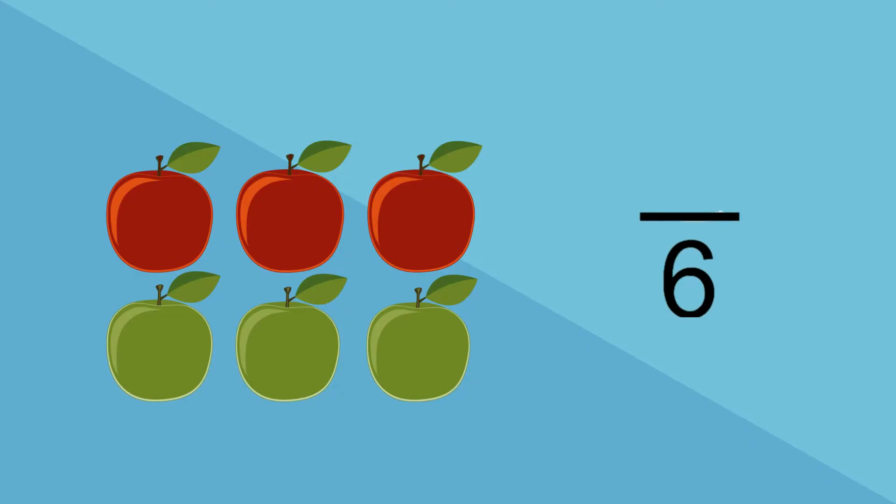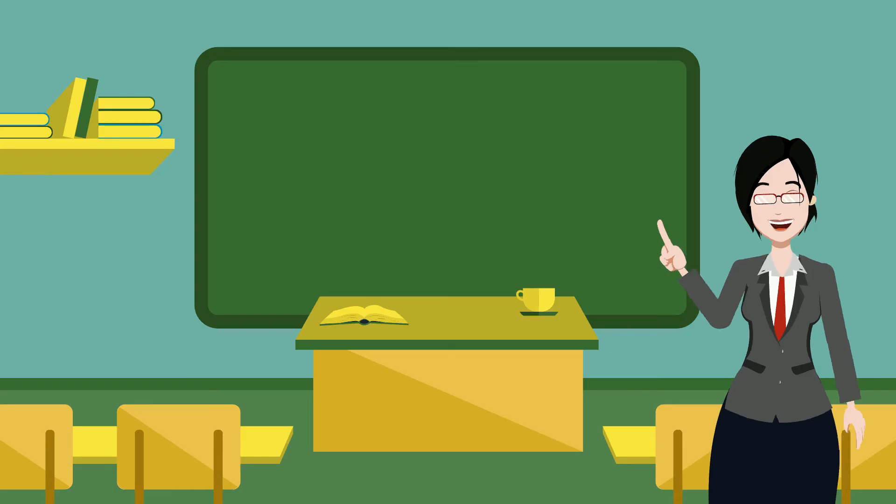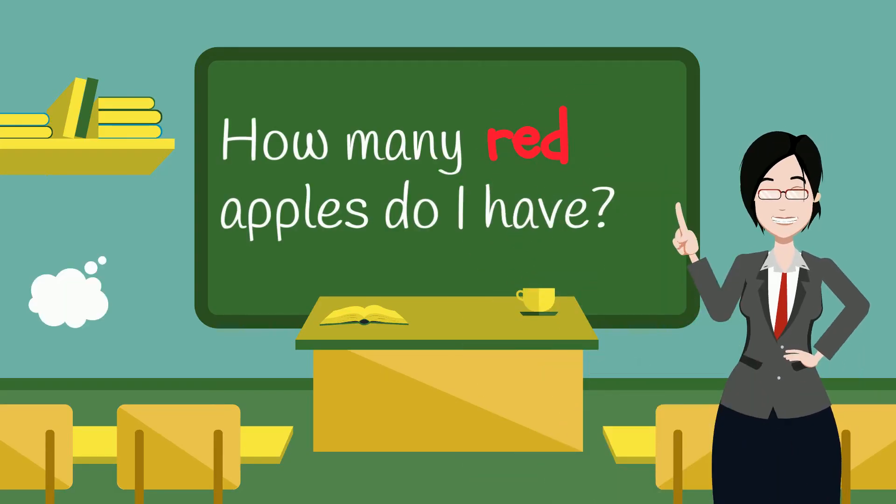We have six apples, so six is on the bottom. Next, ask yourself, how many red apples do I have? Three. Three apples are red.